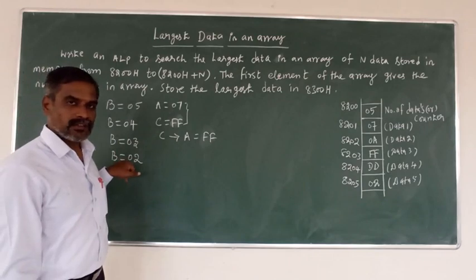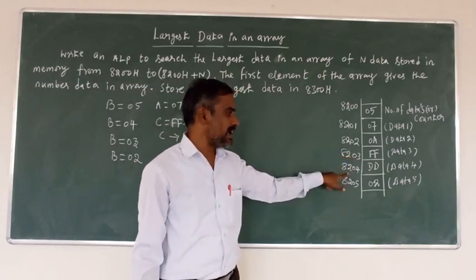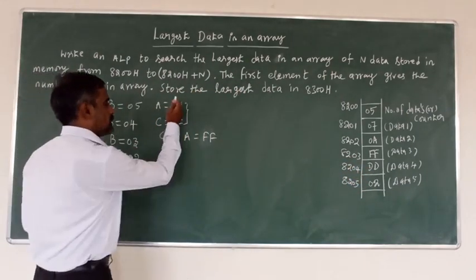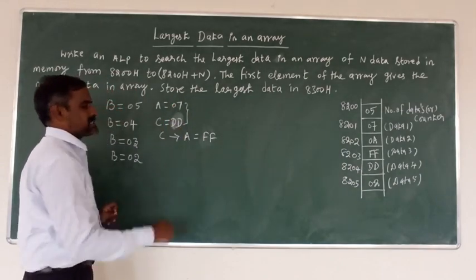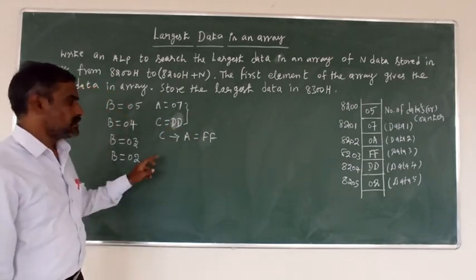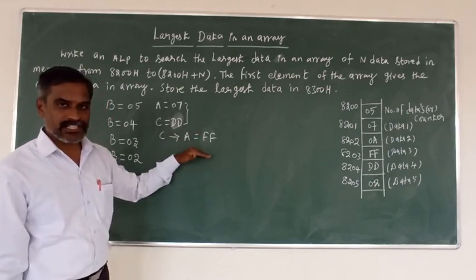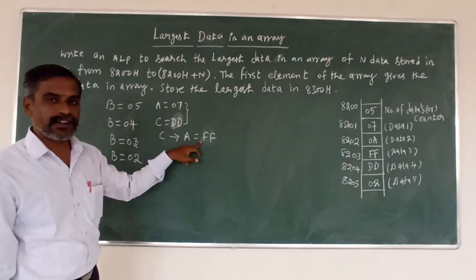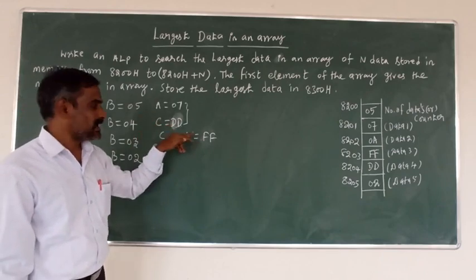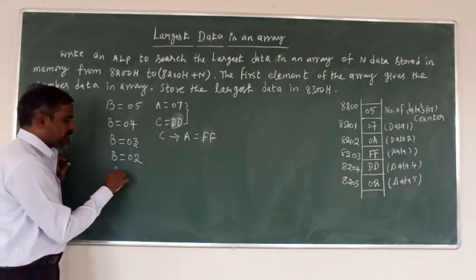Check whether B is zero or not - no zero, so again jump back. Increment the memory address from 8203 to 8204. Move this data into C register - now C equals ADh. Compare accumulator 0Fh with C register ADh. Here the accumulator itself is the largest data - wait, actually we compare: carry flag will be reset or set. Here the accumulator 0Fh is less, carry set, so move C to accumulator. Then decrement B register; now B equals 01.